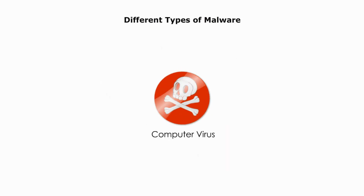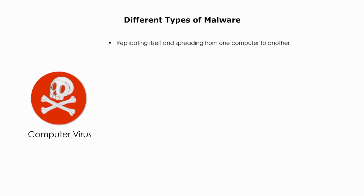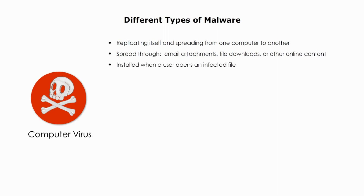Computer virus. A computer virus is a type of malware that can replicate itself and spread from one computer to another. Viruses are often attached to emails, file downloads, or other online content. When a user opens an infected file, the virus can be installed on their computer.